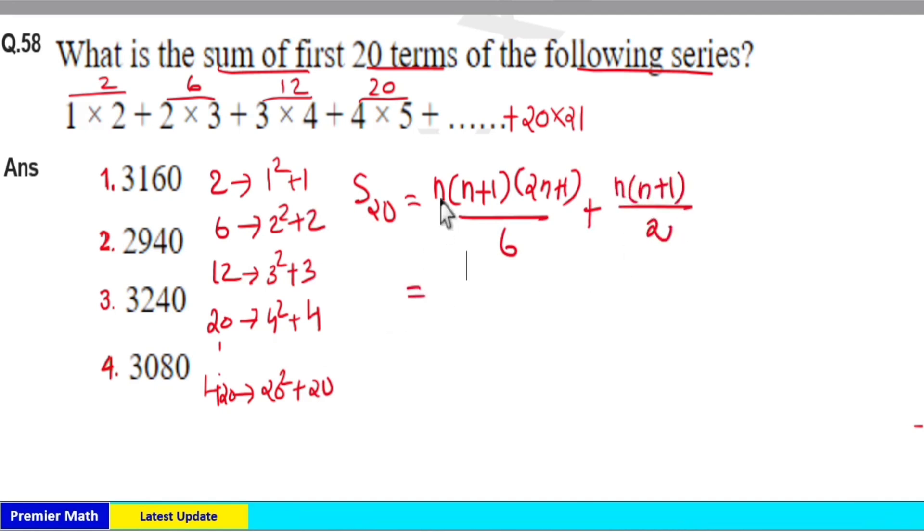Now if you substitute the value n equals 20 here: 20 into 21 into 2n plus 1, means 2n equals 40, 40 plus 1 is 41 divided by 6, plus here 20 into 21 by 2.